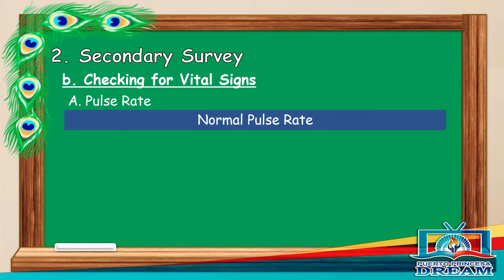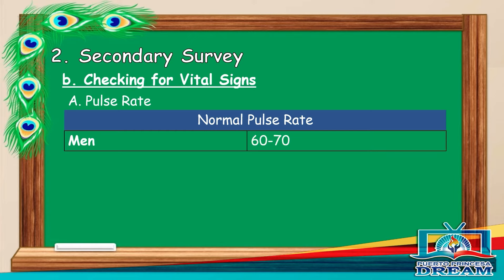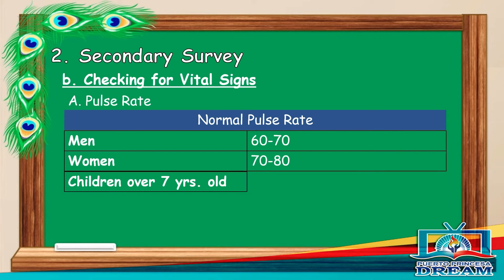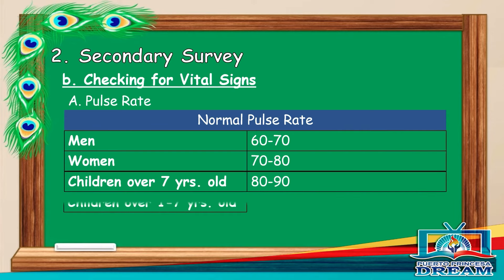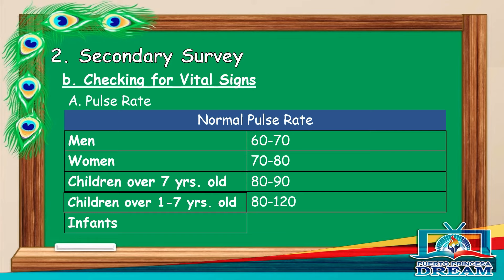The table shows the normal pulse rate. For men: 60 to 70. For women: 70 to 80. For children over 7 years old: 80 to 90. For children 1 to 7 years old: 80 to 120. For infants: 110 to 130.